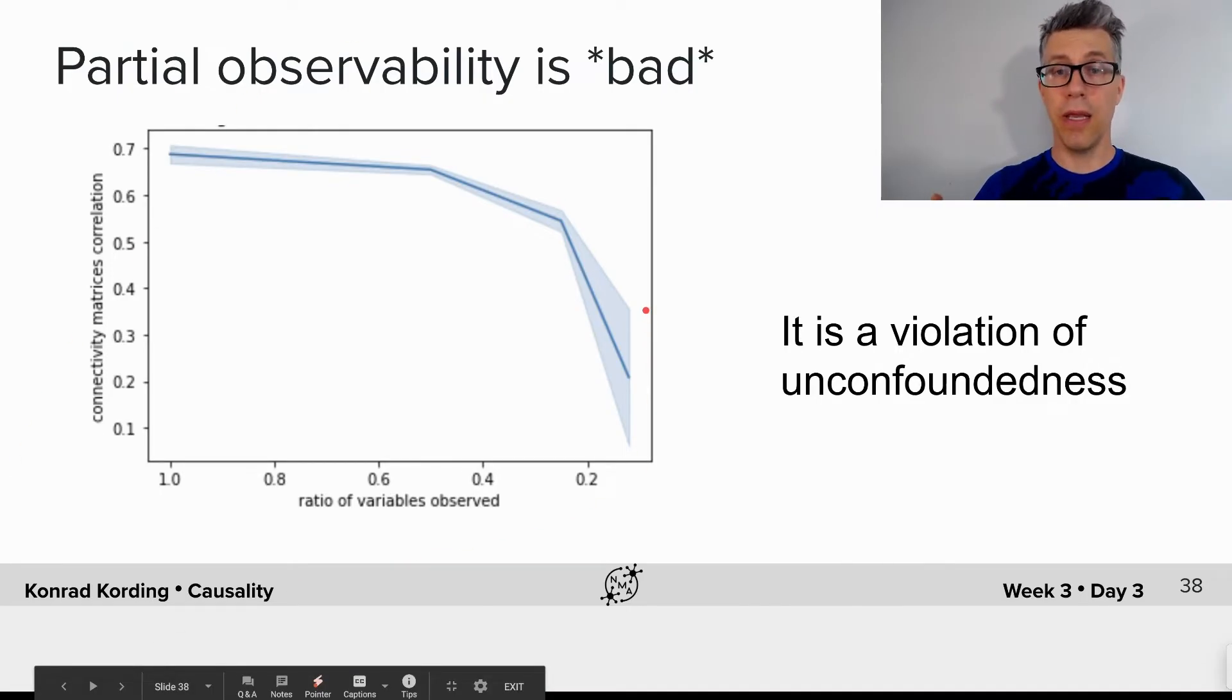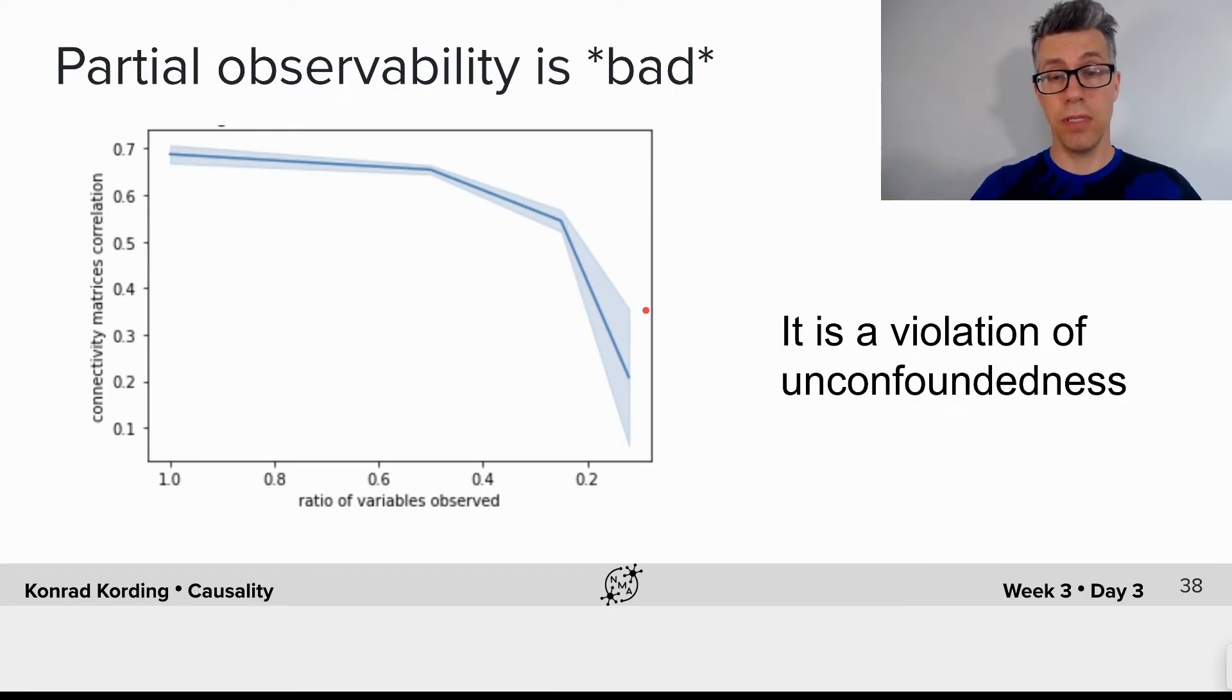We will typically record from hundreds or thousands of neurons. In fMRI research we will, if we are lucky, record from tens of thousands of voxels. The brain is ten to the eleven dimensions.